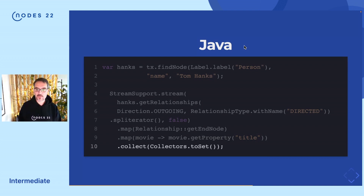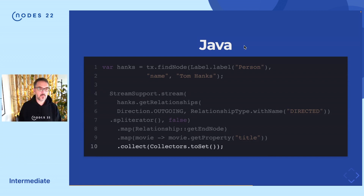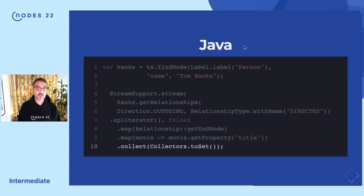So you can see there are a lot of things missing here — I didn't do any error checking, exception handling, or null checks. You would normally do all of this, making the code even more verbose compared to Cypher. And already you can see Cypher is a lot more compact.